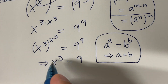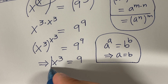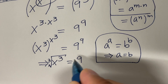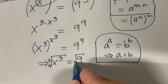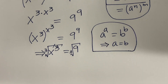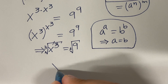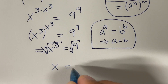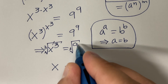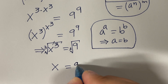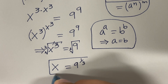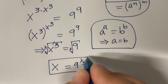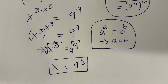Since we want to find x, let's take the cube root on both sides. Therefore these will cancel and we will end up with x equal to the cube root of 9, which can be written as 9 raised to the power 1 over 3. This is our answer.